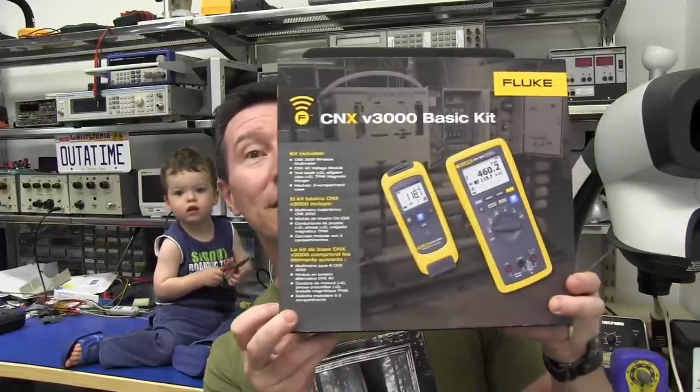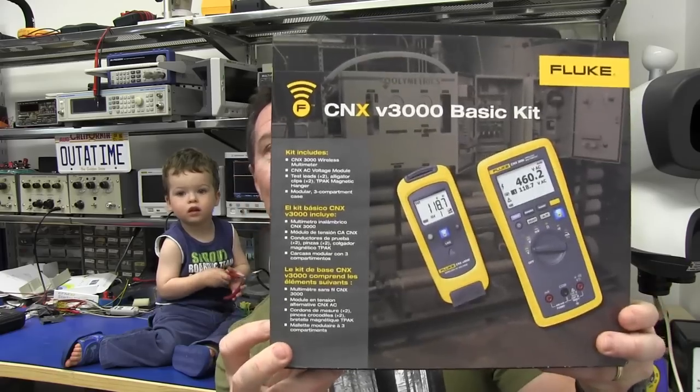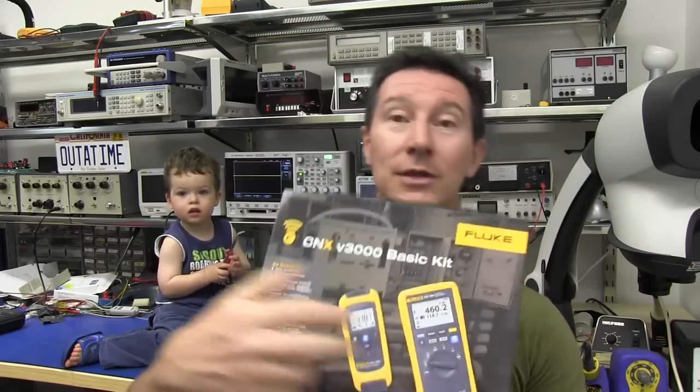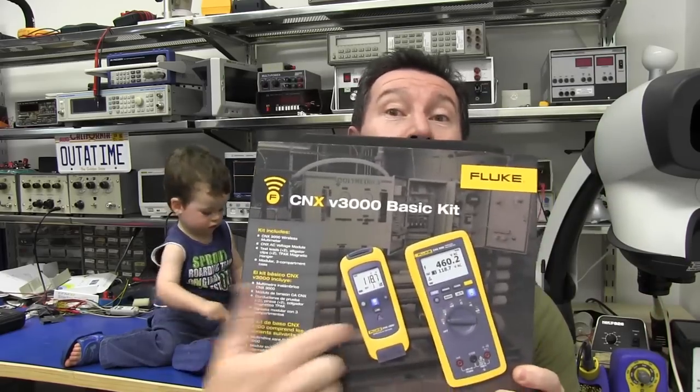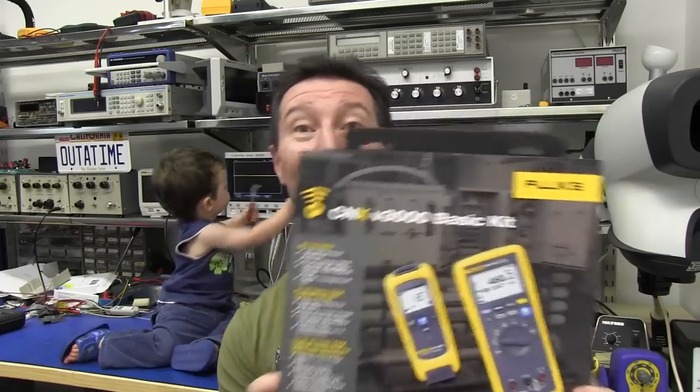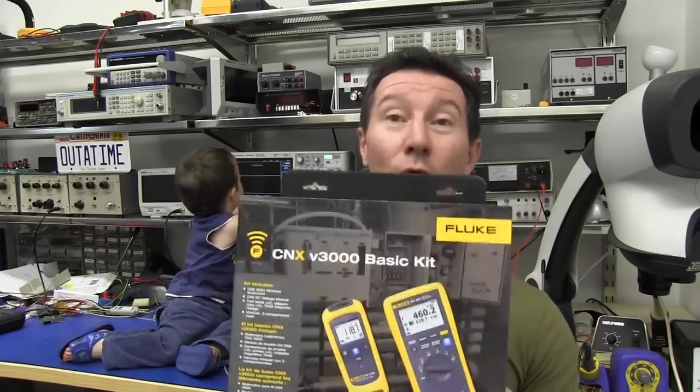Yes, we got another contest slash giveaway this time. It's a Fluke CNX 3000 basic kit, so you get the multimeter, you get the wireless AC adapter plus the pouch and all of the cables and accessories.